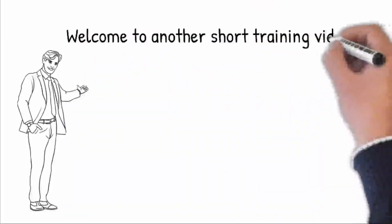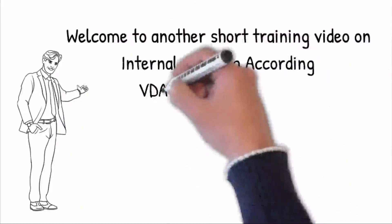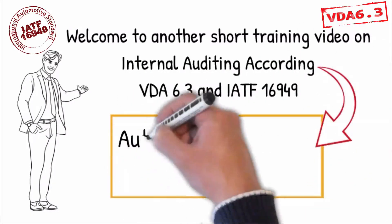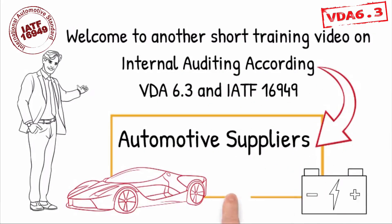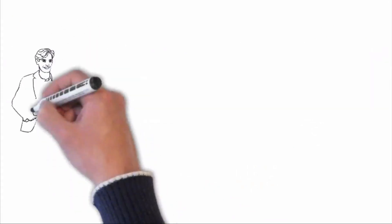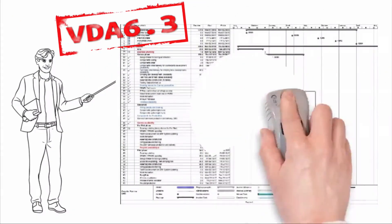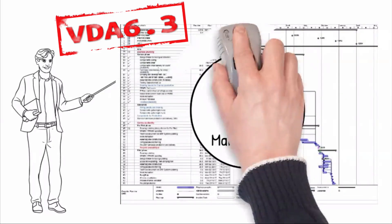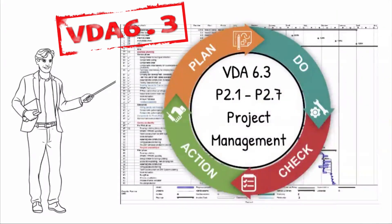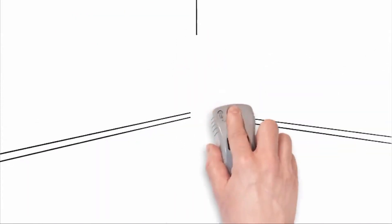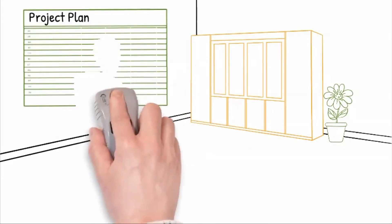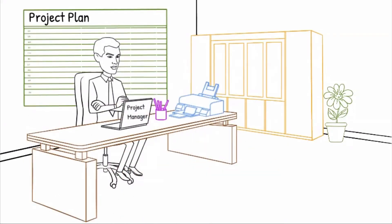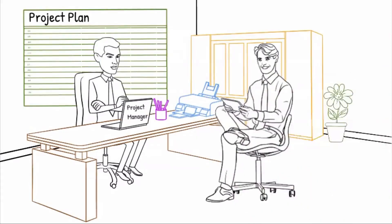Welcome to another short training video on internal auditing according to VDA 6.3 and IATF 16949, which is primarily applicable for automotive suppliers and their sub-tier suppliers. In this video we will focus on VDA 6.3 questions P2.1 to P2.7, which are related to the project management process, to verify that the project process is effectively implemented and managed with the necessary resources to ensure that the project milestones will be achieved according to the customer timeline.